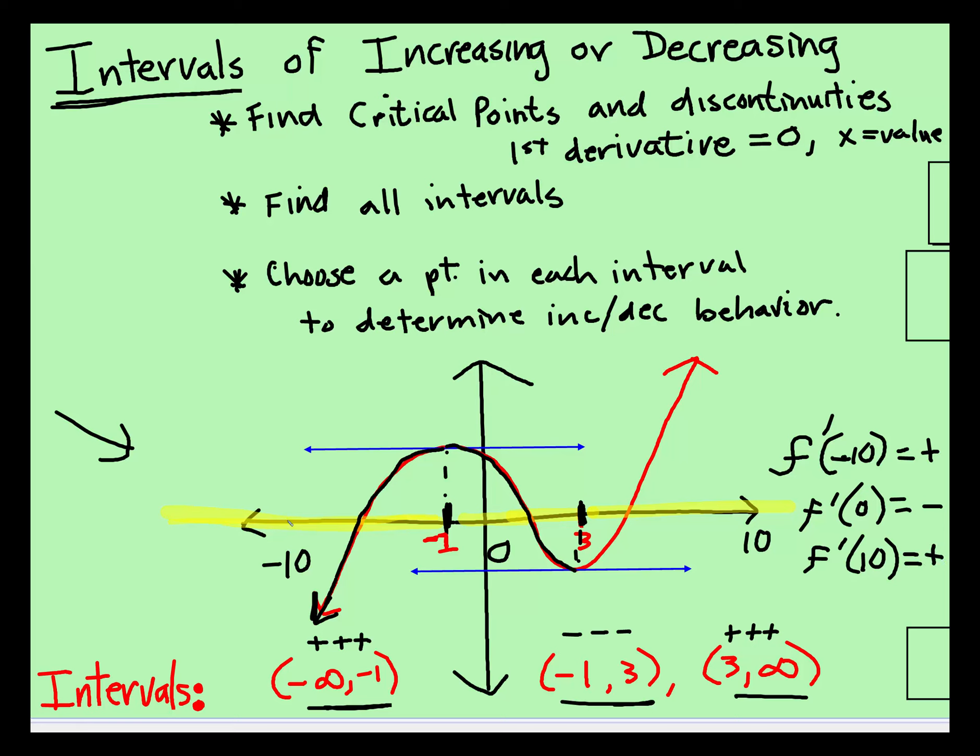So when we plug negative 10 into here, the result is going to be positive. The graph is going to be increasing. When we plug in f prime of 0, it's negative. The graph will be decreasing. When we plug 10 into the derivative, so f prime of 10, we're back to positive and the graph is increasing. And this is how you show the work. And then the next video will be an example step by step. That's it.